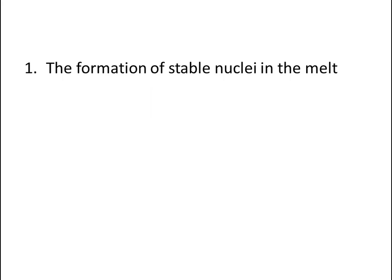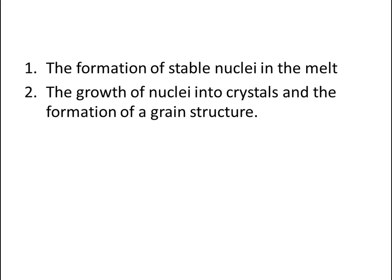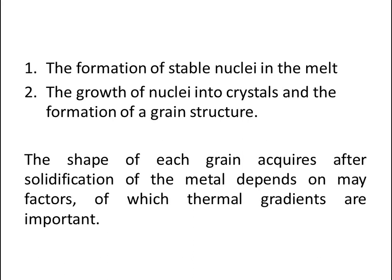Step 1: the formation of stable nuclei in the melt. Step 2: the growth of nuclei into crystals and the formation of a grain structure. The shape each grain acquires after solidification of the metal depends on many factors, of which thermal gradients are important.